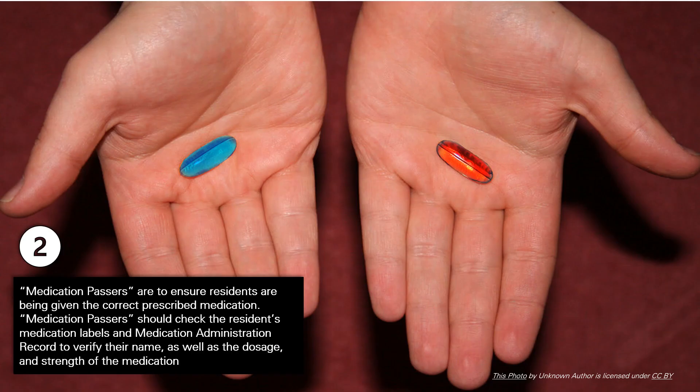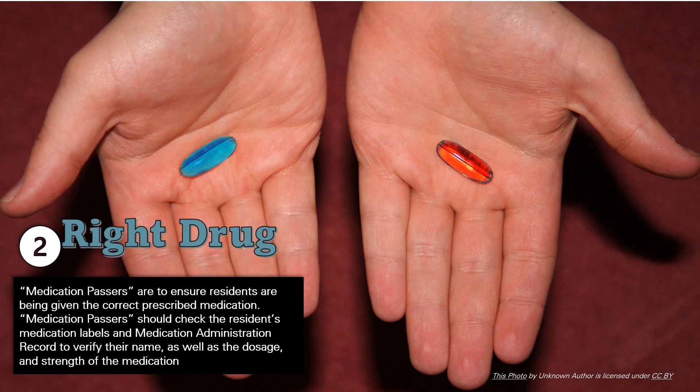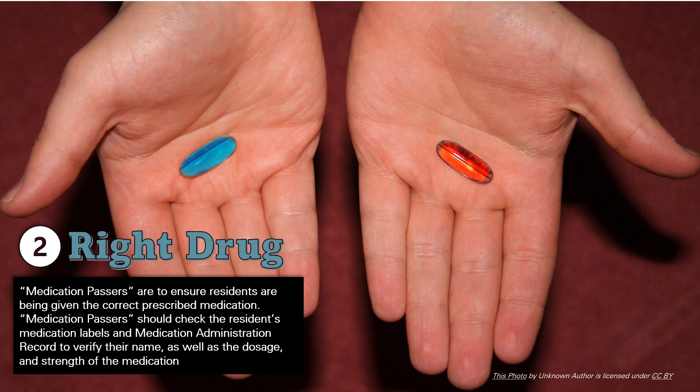The second right is right drug. Medication passers are to ensure residents are being given the correct prescribed medication. Medication passers should check the resident's medication labels and medication administration record to verify their name, as well as the dosage and strength of the medication.